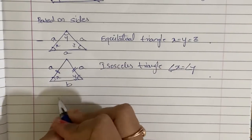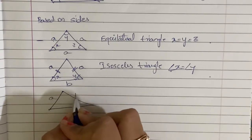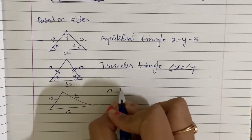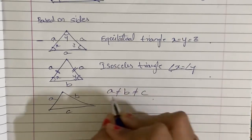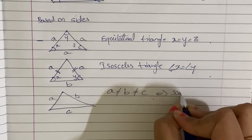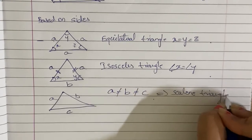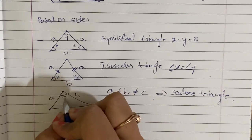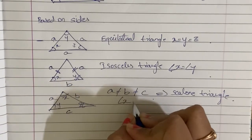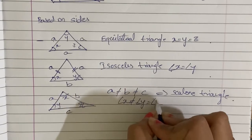Next, scalene triangle. Three sides A, B, C. If A is not equal to B is not equal to C — three different sides — this triangle is a scalene triangle. In a scalene triangle, angles X, Y, Z are all different: angle X is not equal to angle Y, and angle Y is not equal to angle Z.